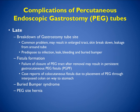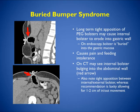Late complications include breakdown of the gastrostomy tube site, infection, leak, bleeding, fistula formation to the abdominal wall or adjacent organs — there are case reports of colocutaneous fistula due to PEG placement through an interposed colon on the way to the stomach — buried bumper syndrome, and PEG site hernia. Buried bumper syndrome occurs when long-term tight apposition of the PEG bolsters causes the internal bolster to erode the gastric wall; on endoscopy the bolster is buried in the gastric mucosa, causing pain and feeding intolerance. CT may show the internal bolster bulging into the abdominal wall, as demonstrated here.